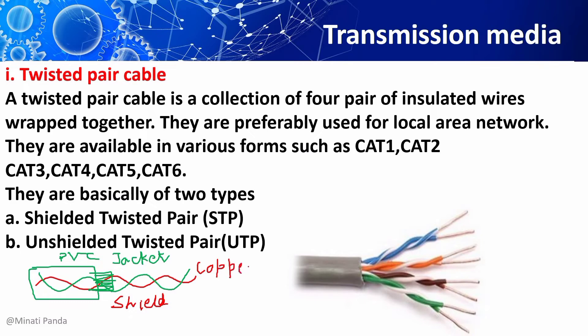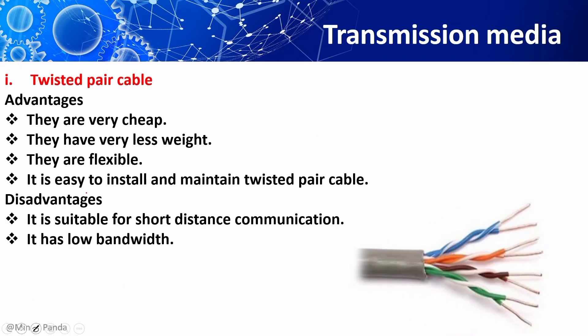There are eight categories of unshielded twisted pair. Cat1 is devoted to voice grade communication only — no data transmission. Cat2 to Cat8 are devoted for data grade transmission.